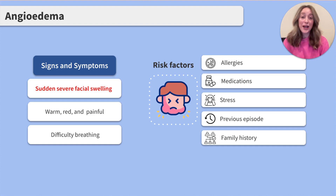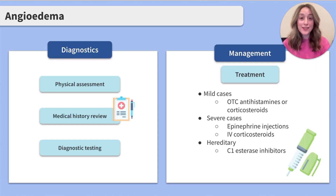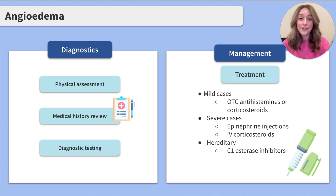Let's move on and review how angioedema is diagnosed and treated. Angioedema is typically diagnosed with a combination of a physical assessment, review of medical history, and occasionally diagnostic testing. Treatment varies depending on the underlying cause and severity of symptoms. This can include over-the-counter antihistamines or corticosteroids for mild cases, or epinephrine injections or corticosteroids given through an IV for severe cases or cases with an airway obstruction.